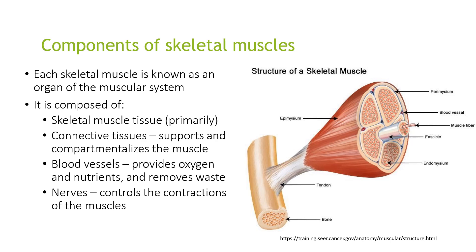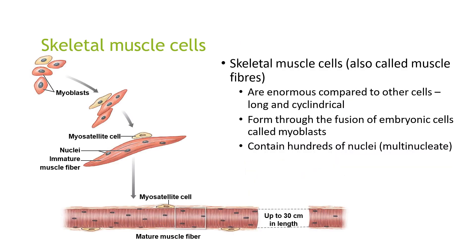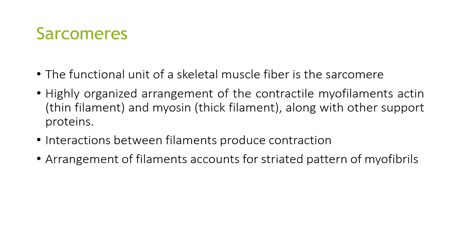Each skeletal muscle is an organ of the muscular system, composed of skeletal muscle tissue. Connective tissue serves to compartmentalise the muscle; blood vessels provide oxygen and nutrients and remove waste; and nerves control the contraction of the muscles. Skeletal muscle cells, also called muscle fibres, are large and cylindrical. They are produced by the fusion of embryonic cells called myoblasts and have hundreds of nuclei, known as multinucleate. The functional unit of skeletal muscle fibres is the sarcomere — a highly organised arrangement of contractile myofilaments including actin thin filaments and myosin thick filaments along with other support proteins. Interactions between filaments produce contraction, and this arrangement accounts for the striated pattern of myofibrils.